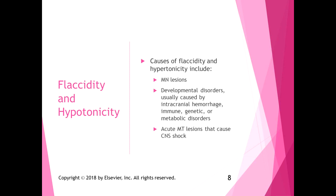Regarding causes of flaccidity and hypertonicity: both can be caused by motor neuron lesions and developmental disorders — usually caused by intracranial hemorrhage, immune, genetic, or metabolic disorders. CP usually presents with hypertonicity, but there are other developmental disorders that cause flaccidity. Acute motor tract lesions that cause central nervous system shock, like spinal cord injuries, can cause flaccidity or hypotonicity.